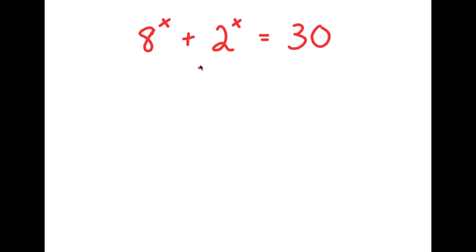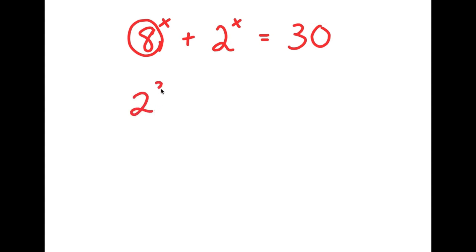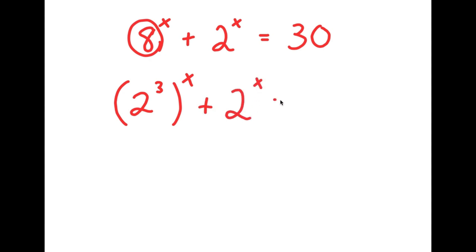In this problem, I have 8 to the power of x plus 2 to the power of x is equal to 30. I'm going to first start by rewriting 8 as 2 to the power of 3. So now I have 2 to the power of 3 to the power of x plus 2 to the power of x is equal to 30.